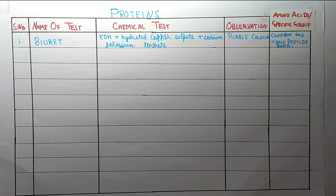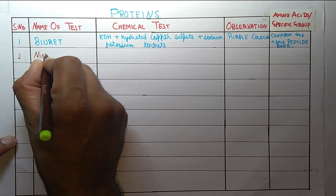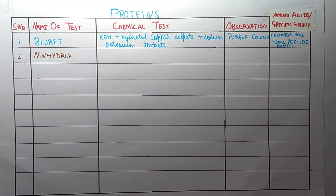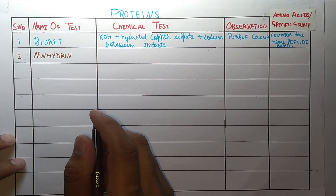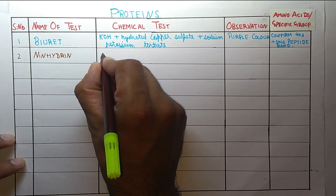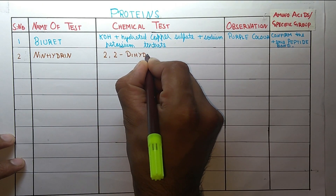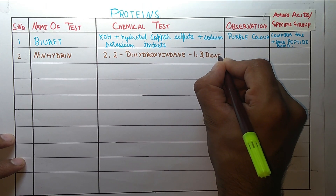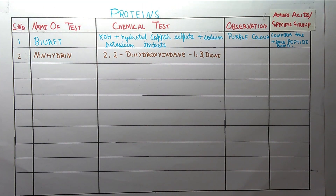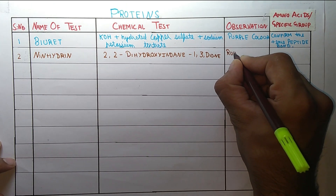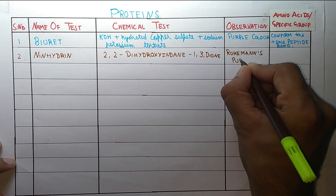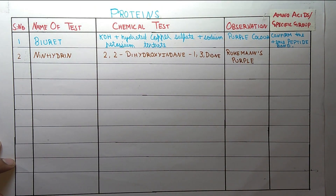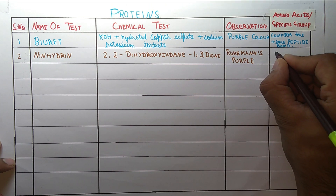The second test is the Ninhydrin test. In Ninhydrin test we use 2,2-dihydroxyindane-1,3-dione. The color observed is Ruhemann's purple. It confirms the presence of the amino acid proline.